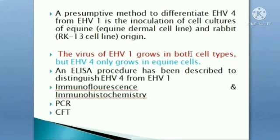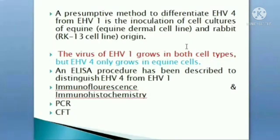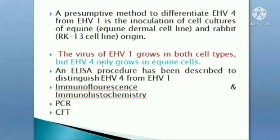A presumptive method to identify Equine Herpes Virus 1 is inoculation of cell cultures of both equine and rabbit origin. Equine Herpes Virus 1 grows in both cell lines, whereas Equine Herpes Virus 4 grows only in equine cell lines — this difference allows differentiation between EHV-1 and EHV-4.